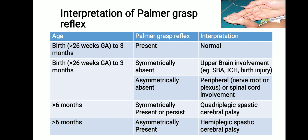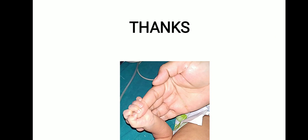In athetoid type of cerebral palsy, the palmer grasp reflex is weakly present. By assessing the palmer grasp reflex, we can evaluate the neurological function of the infant and decide on further investigation and treatment accordingly. Thank you.